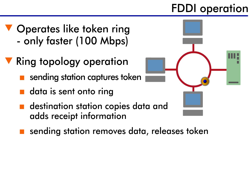The permission comes in the form of grabbing a token, which is a small packet of data that constantly circulates around the ring. When a user needs to send traffic, it must first capture the token. This way, two devices can't transmit at the same time.